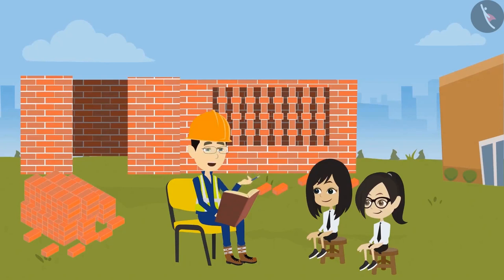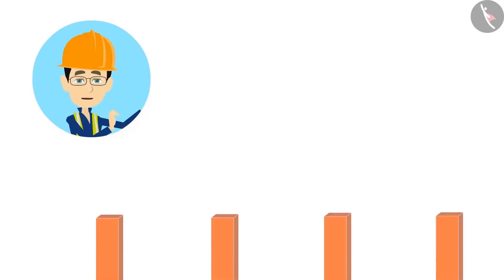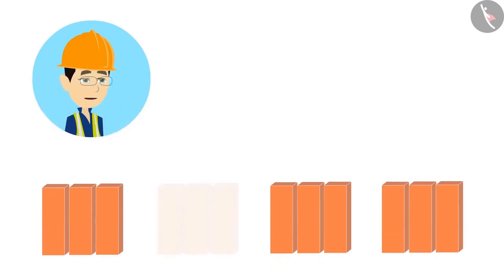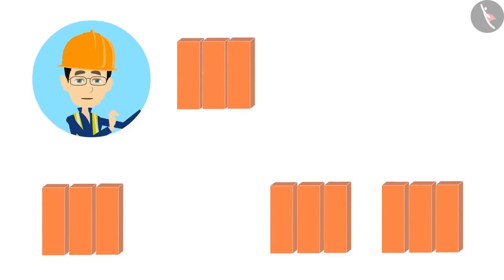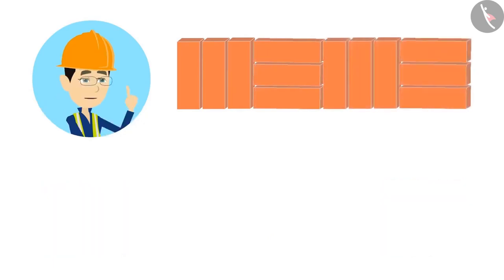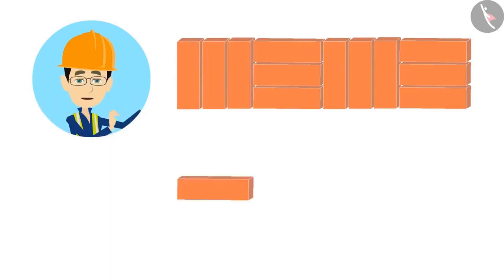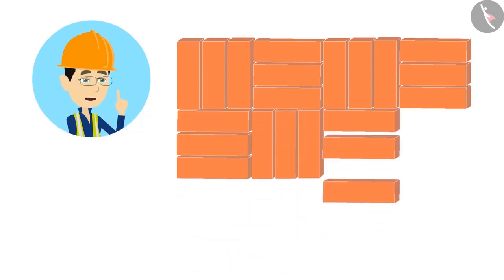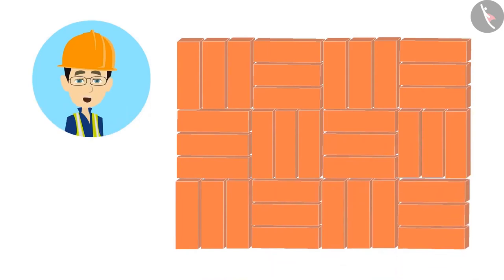First make groups of three bricks. Let's make the first line from these groups. Keep a group so that the bricks are vertical, then keep a different group so that the bricks are horizontal. Once again, a vertical group and a horizontal group. Now let's make the line below it. Because the top line started with vertical bricks, this line will start with horizontal bricks, then vertical, then horizontal. In this way, we make a complete pattern.